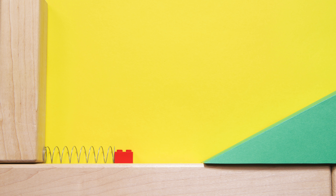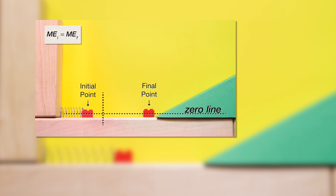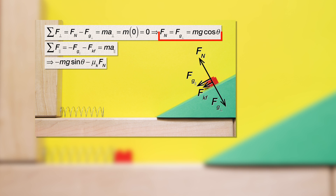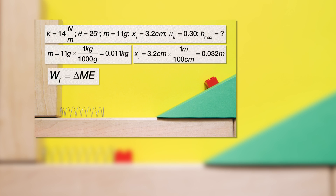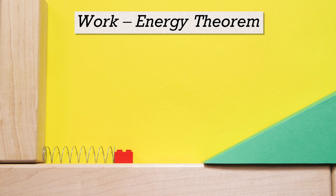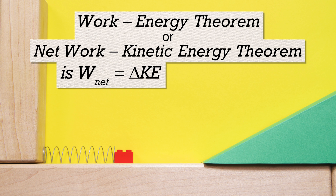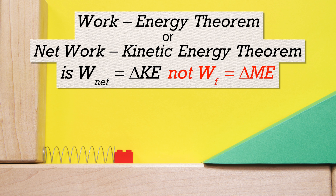Mr. P asked me again to show that the conservation of energy problem with friction and an incline and a spring, which I did twice, can also be solved using the work-energy theorem — or what Mr. P prefers to call the net work kinetic energy theorem — because evidently we tend to confuse the net work equals change in kinetic energy equation with the work due to friction equals change in mechanical energy equation.